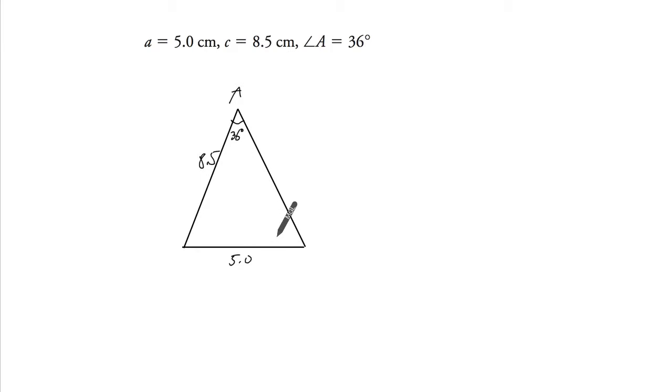Now if this here is a triangle that's possible, this length of 5 needs to be greater than the height, because it's the hypotenuse. It must be greater than the height here.